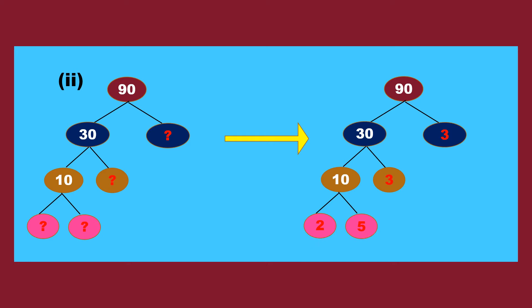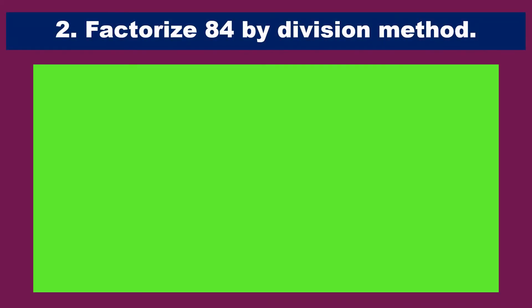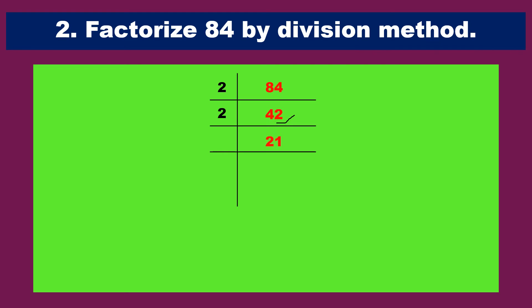Let us go to the second question. Here is the second question: factorize 84 by the division method. The first problem we solved with the factor tree method; now we solve with the division method. In the division method, the first step is you should start the division with the least prime factor, and you should continue the procedure until you get 1 as the quotient. So let me take 84. The last digit is 4, which means it is divisible by 2, so 2 is the least prime factor. We start: 2 × 42 = 84. Again 42 ends in 2, so 2 × 21 = 42.